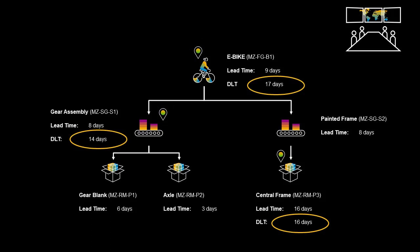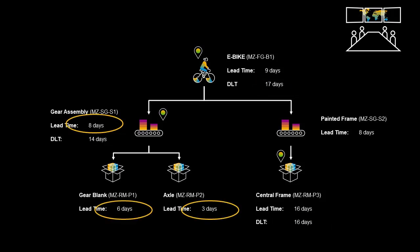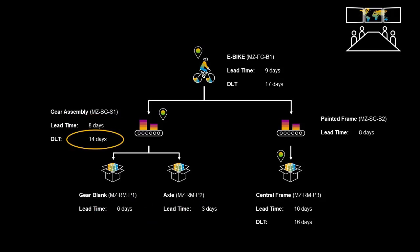The decoupled lead time, or DLT, is based on the longest lead time of the components used plus the manufacturing lead time. For example, the lead time to make the gear assembly is eight days. The gear assembly has two components: the blank gear with a procurement lead time of six days, and the axle with a lead time of three days. As we are using the longest component lead time, the component lead time is six days in this case. This means the DLT or decoupled lead time is 14 days — eight for the manufacturing lead time in the gear assembly, plus six for the procurement lead time for the blank gear.